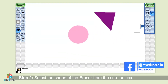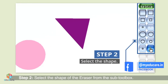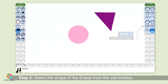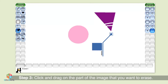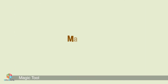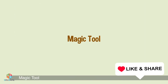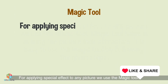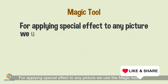Step 2: Select the shape of the eraser from the sub toolbox. Step 3: Click and drag on the part of the image that you want to erase. For applying special effects to any picture, we use the magic tool.